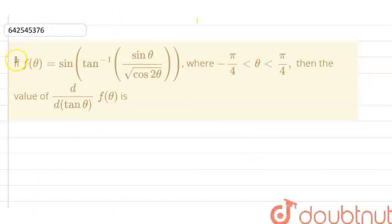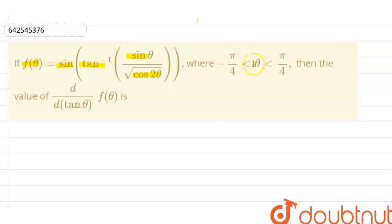Hello everyone, so today we are going to solve this question. The question states that if f(θ) is equal to sin(tan⁻¹(sinθ / √cos2θ)), where θ belongs to the range −π/4 to π/4, then find the value of d/d(tanθ) of f(θ).